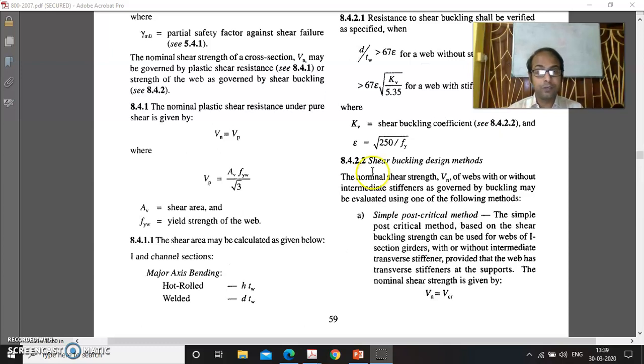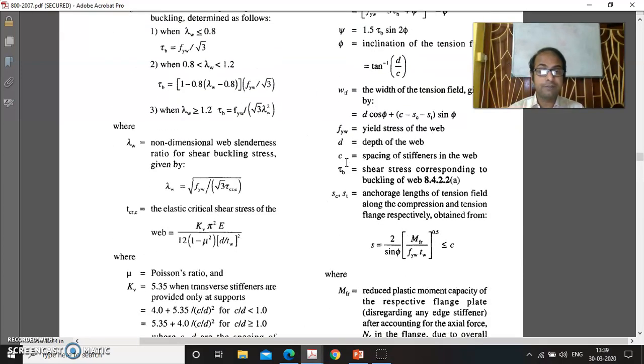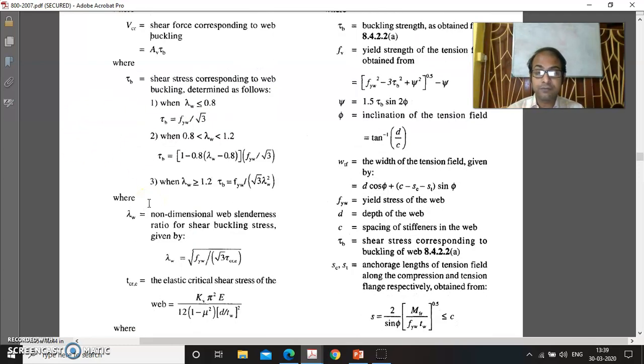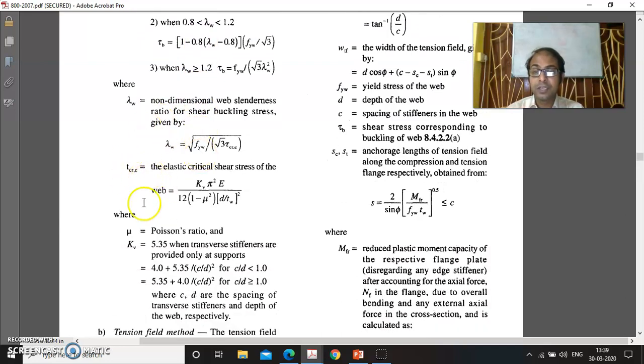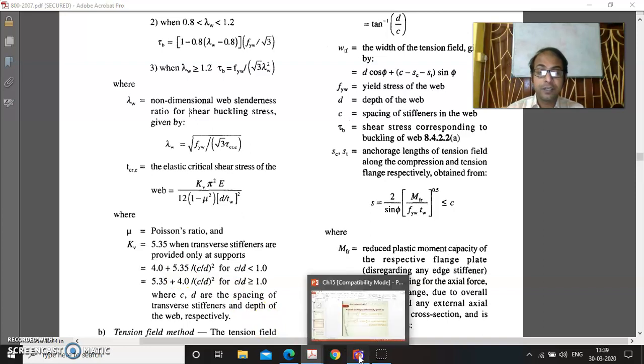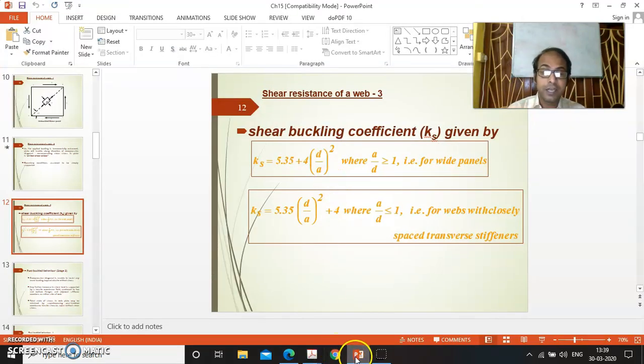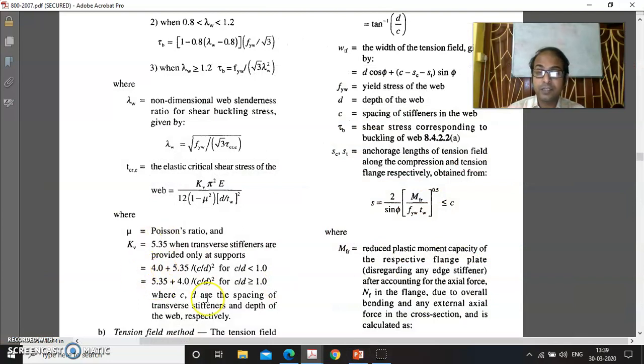In the simple post-buckling method, we have to go for the checking. We have some provisions here. The code has mentioned this factor which is also termed as kv, the shear buckling coefficient.